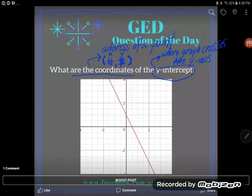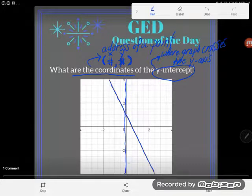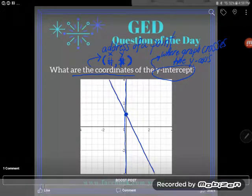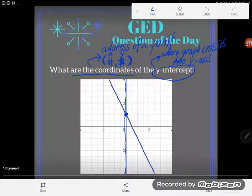It's where my graph, so in this case my graph of a line, crosses the y-axis. You can see the crossing point right here where the two meet is right there. So that's what they're asking me to do: find the coordinates of that point right there, the place where they cross.